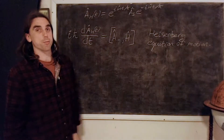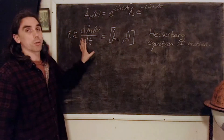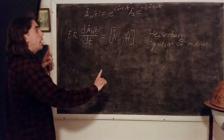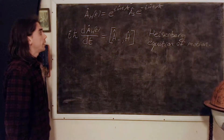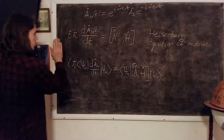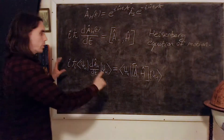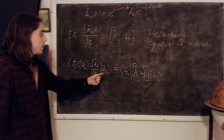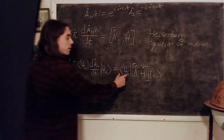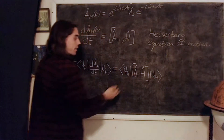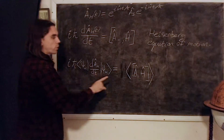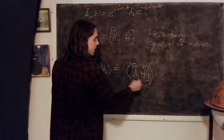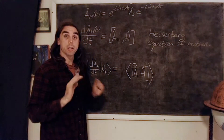We call this the Heisenberg equation of motion, so it's fulfilling the role of the time-dependent Schrödinger equation. If we take expectation values of both sides, we can write that as follows. We've sandwiched everything between time-independent Heisenberg states. We of course just have the expectation value, where there's no need to write the subscript h anywhere here, because expectation values are independent of picture.